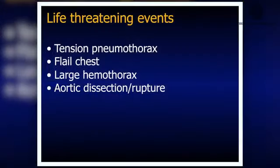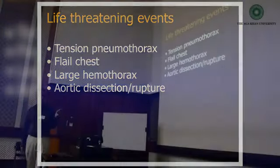Life-threatening events in the chest include: tension pneumothorax, flail chest, large hemothorax — where hemo refers to blood — and aortic dissection and rupture. We will cover these one by one.